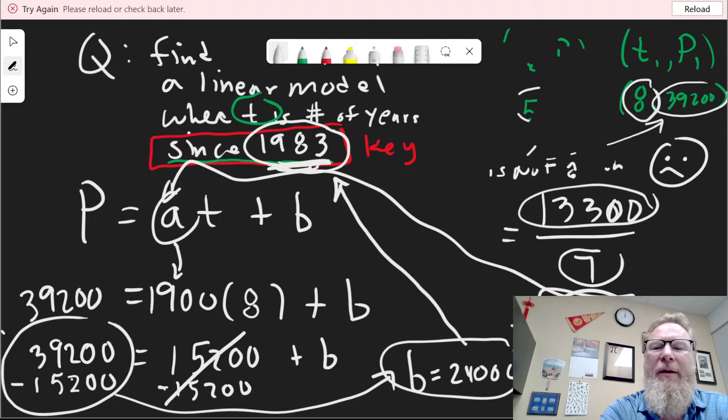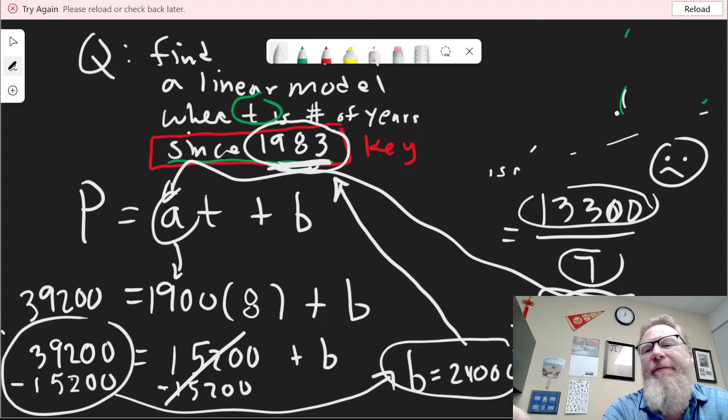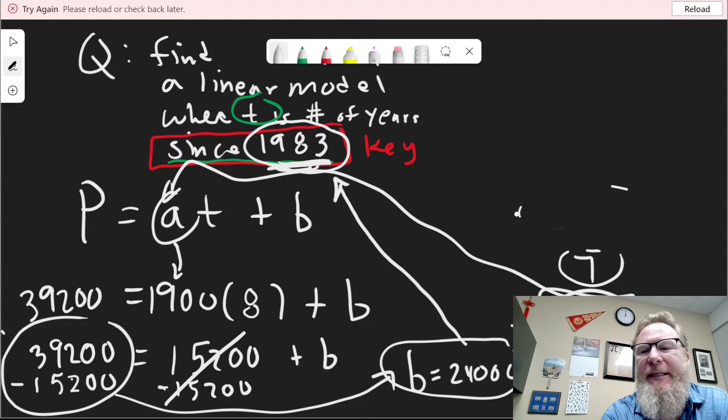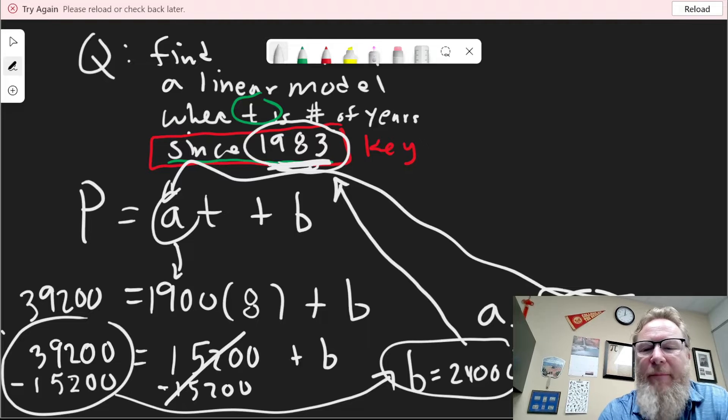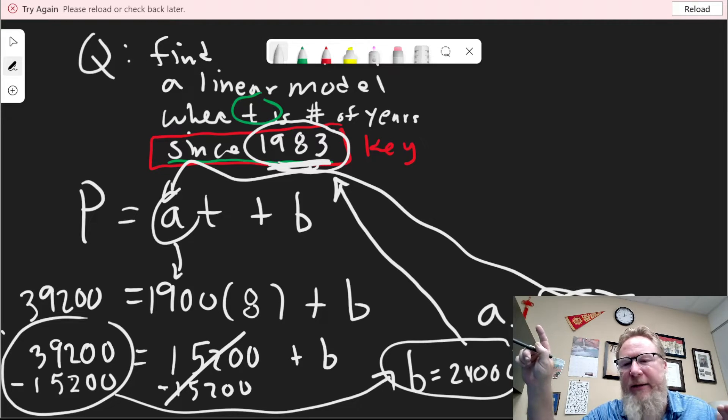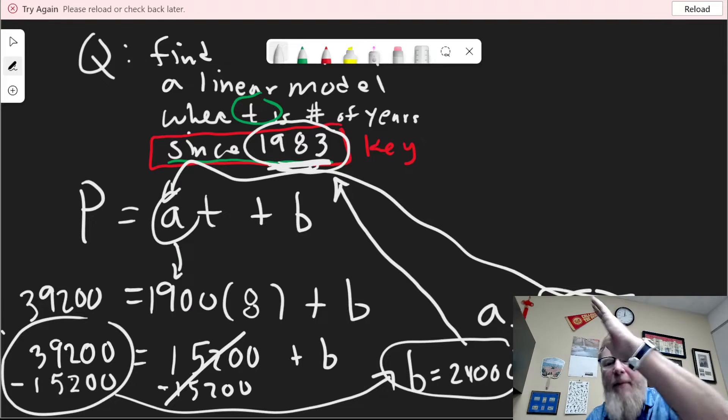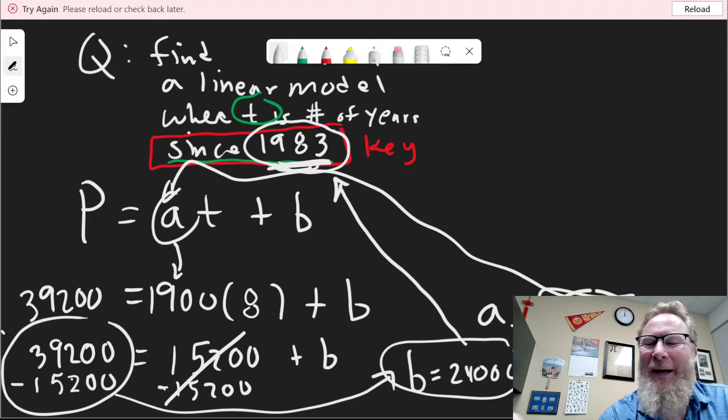So even though B is not free, it's pretty cheap. It's pretty easy to get. 1,900 people per year times 8 years. So that means during those 8 years, 15,200 people moved to this town. And now by subtracting the 15,200 from the 39,200 that are there now, that leaves you with B equals 24,000 people.